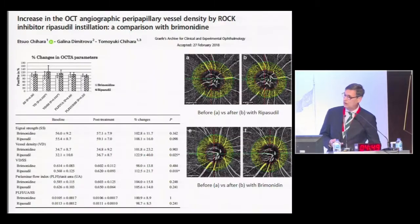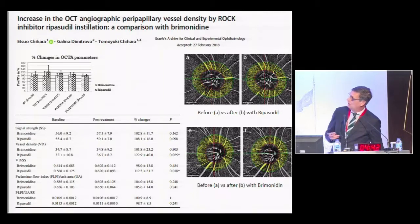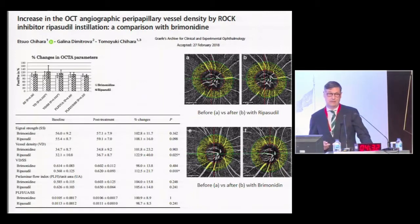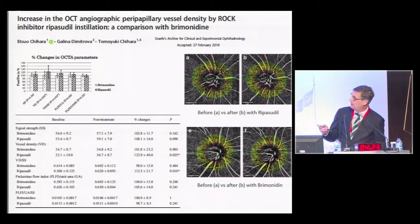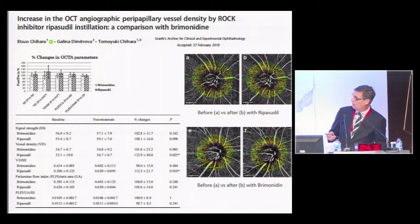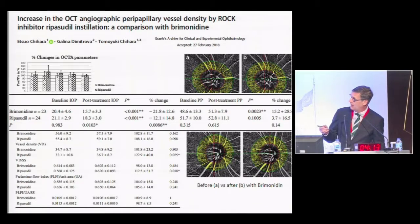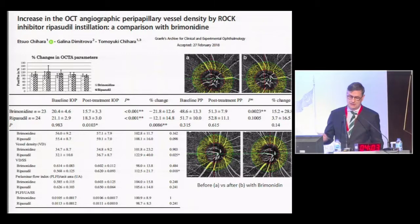Eye drops also seem to influence capillary density. In work from Jihara, they compared eye drop treatment with brimonidine (an alpha-2 agonist) versus ripasudil (a ROCK-2 inhibitor). They found that after application of the ROCK inhibitor, capillary density increased, which did not happen with the alpha-2 agonist — even though the intraocular pressure drop was higher with the alpha-2 agonist. Somehow the ROCK inhibitor had an independent influence on OCT-A imaging.